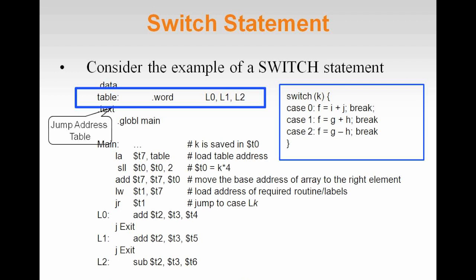The assembly program shown here executes the switch statement shown in the blue box. The value of k can be 0, 1, or 2. Within assembly, the corresponding cases for 0, 1, and 2 are pointed out by L0, L1, and L2.